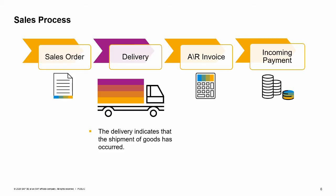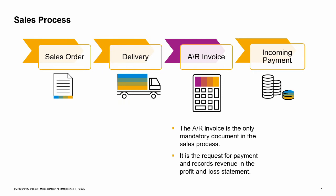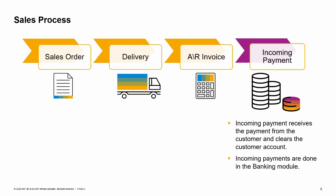The delivery indicates that the shipment of goods has occurred. The AR invoice is the only document that must be created in the sales process. It is the request for payment and records the revenue in the profit and loss statement. The incoming payment receives the payment from the customer and clears the customer account. Internal reconciliation takes place automatically. Incoming payments are done in the banking module.